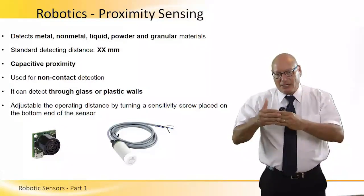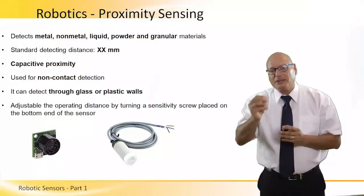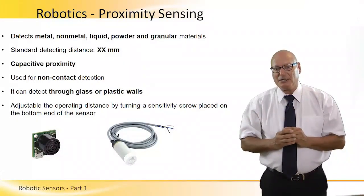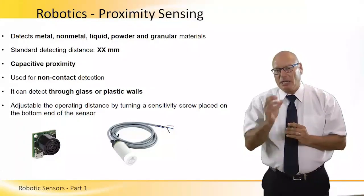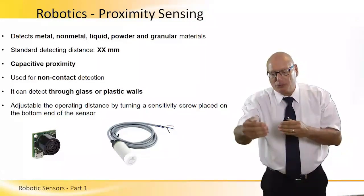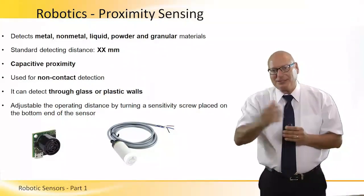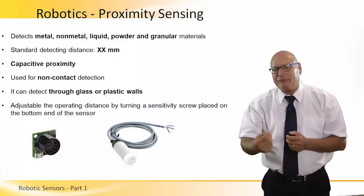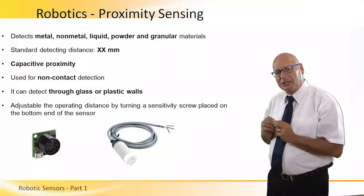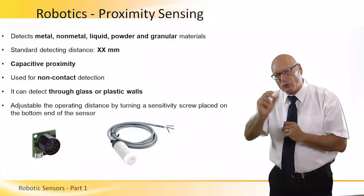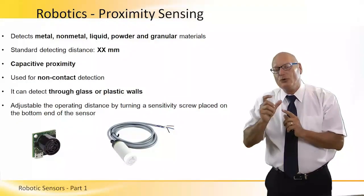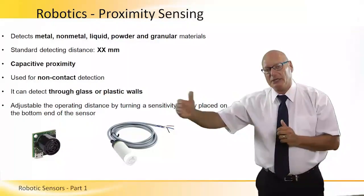Proximity sensing is a distance measurement that can detect metal, non-metal, liquid, powder, and granular materials. It is a capacitive type of sensing with no need for contact — even without touching, we can analyze the distance between the sensor and the object being sensed. The standard detecting distance can be varied according to the sensitivity level of the sensor, and in some sensors the sensitivity can be adjusted via a screw on the back to make it more or less sensitive. It is a non-contact range detector for a wide variety of materials.